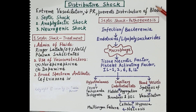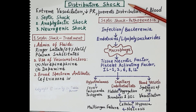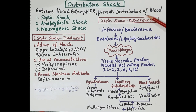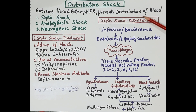This is the third video, shock Part 3. It covers distributive shock in detail. In distributive shock, the heart pumps well, but there is extreme vasodilation. Because of extreme vasodilation, there is a fall in peripheral resistance, which reduces blood pressure and prevents distribution of blood to the tissues — resulting in poor perfusion, ischemia, tissue necrosis, organ failure, and multi-system organ failure. Distributive shock is of three types.